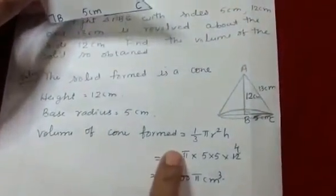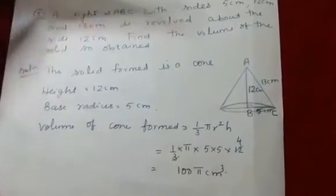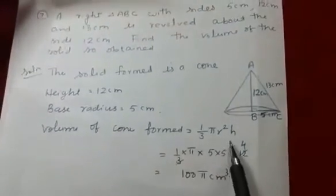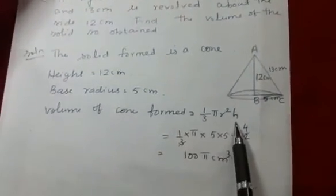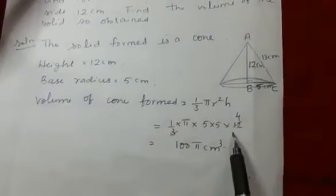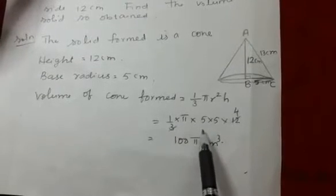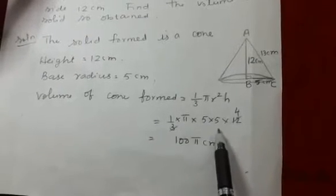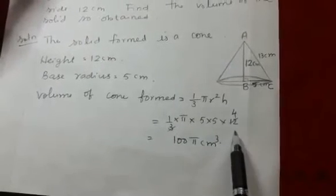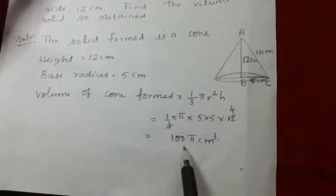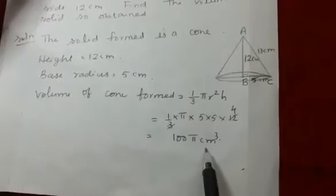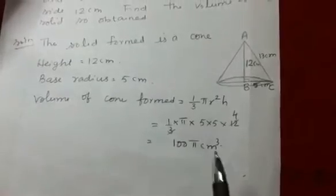The solid formed is a cone with height = 12 cm and base radius = 5 cm. Volume of the cone formed = 1/3 π r² h = 1/3 × π × 5 × 5 × 12, which equals 100π cm³.